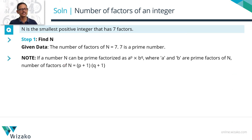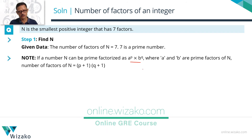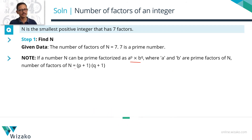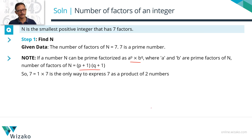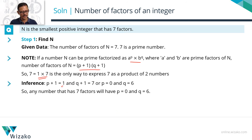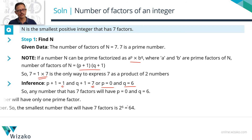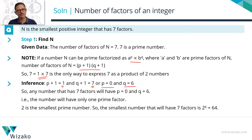To recap: if a number N can be prime factorized as A to the power P times B to the power Q, the number of factors is P plus 1 times Q plus 1. Since 7 equals P plus 1 times Q plus 1 in only one way — which is 1 times 7 — we get P equals 0 and Q equals 6. So N equals A to the power 0 times B to the power 6, and with the smallest prime B equals 2, N equals 2 to the power 6 equals 64.